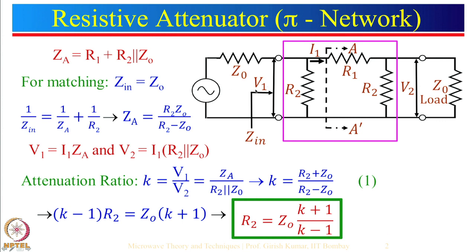One of the main conditions is that the input looking from this side and the output looking from this side should be matched to 50 ohm. For matching, Z_input should equal Z0. Since the network is symmetrical, the output impedance will also equal Z0. That is why we do not use a single resistor R1, but instead use a pi network. Later I am also going to talk about a T network which can also be optimized for impedance matching at both input and output sides.